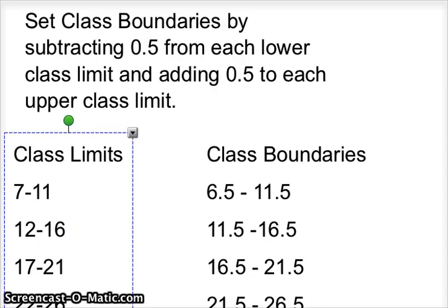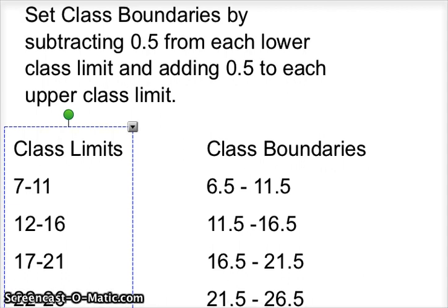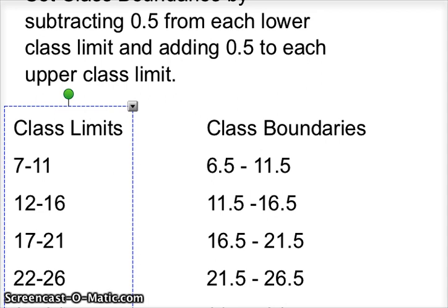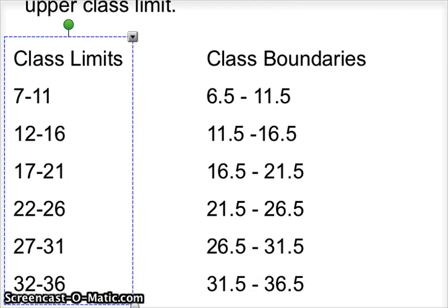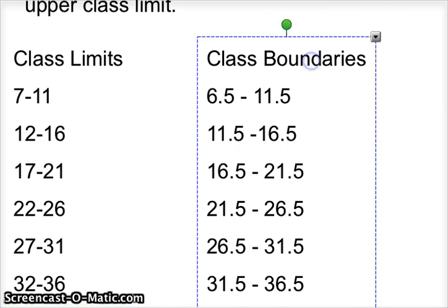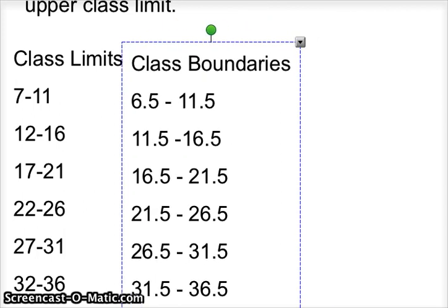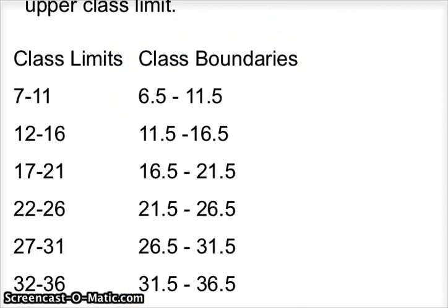The next thing to do is set the class boundaries. Because we're dealing with whole numbers, we're going to subtract 0.5 from each lower class limit and add 0.5 to each upper class limit. It would be slightly different if we were dealing with decimals. Like if you're doing tenths, you would subtract 0.05 from each lower limit and add 0.05 to each upper class limit. Our class limits are on the left boxed there, our class boundaries are on the right. I've subtracted 0.5 from 7 to get 6.5, added 0.5 to 11 to get 11.5, and I just did that consecutively all the way down. 22 minus 0.5 is 21.5, and on and on until we got all six of our classes covered.